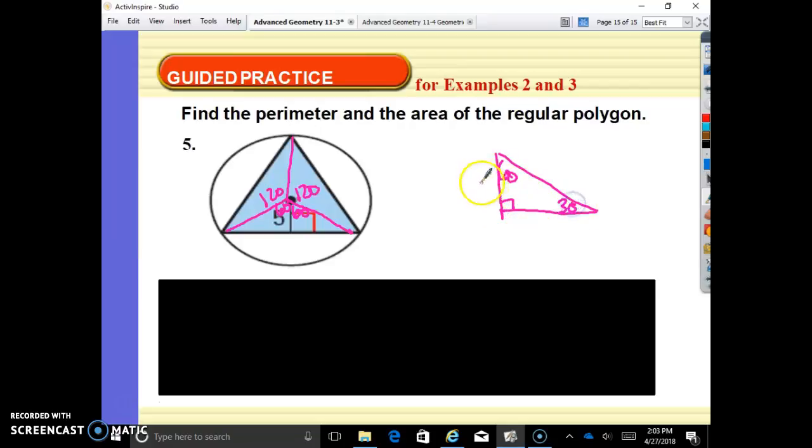That apothem is 5. So if we have a 30-60-90 with 5, it's always x, 2x, x root 3. So if half of this base is 5 root 3, 5 root 3 times 2 is 10 root 3.